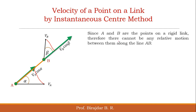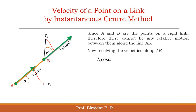Since points A and B are on the same rigid link, there will be no relative motion between these two points. Therefore, the velocity component of point A along AB must equal the velocity component of point B along AB — that is, VA·cos(α) equals VB·cos(β).